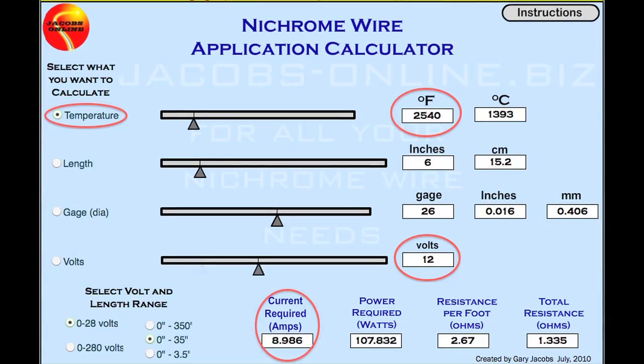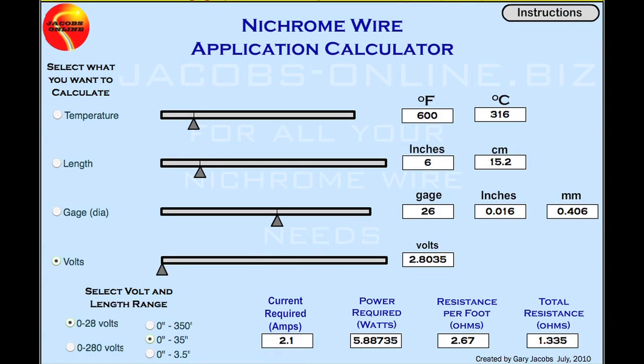To illustrate this point just a little bit further, look at what happens when you apply 12 volts to that same 6 inch handheld cutter. You're looking at over 2500 degrees and close to 9 amps. And that will surely burn up any cheap power supply that you can find. Because of the problems you just saw,